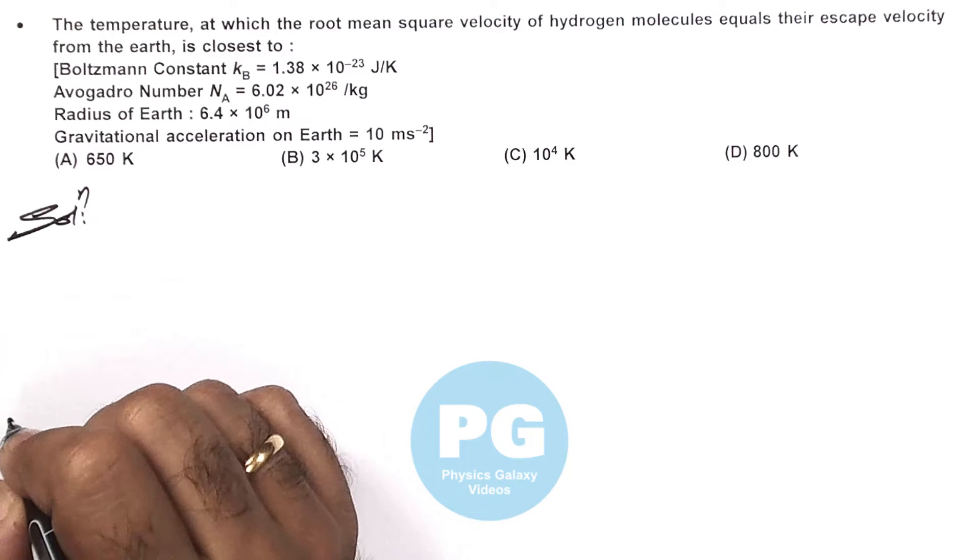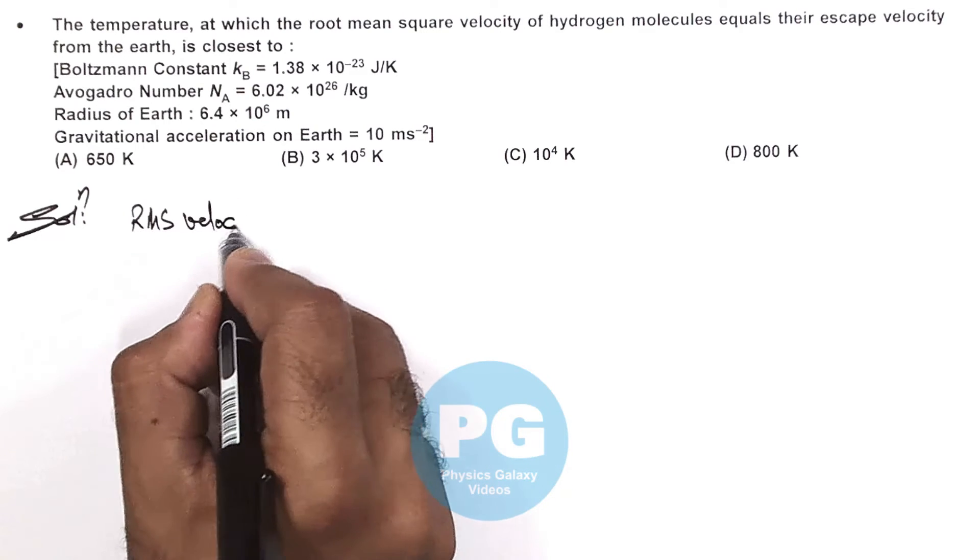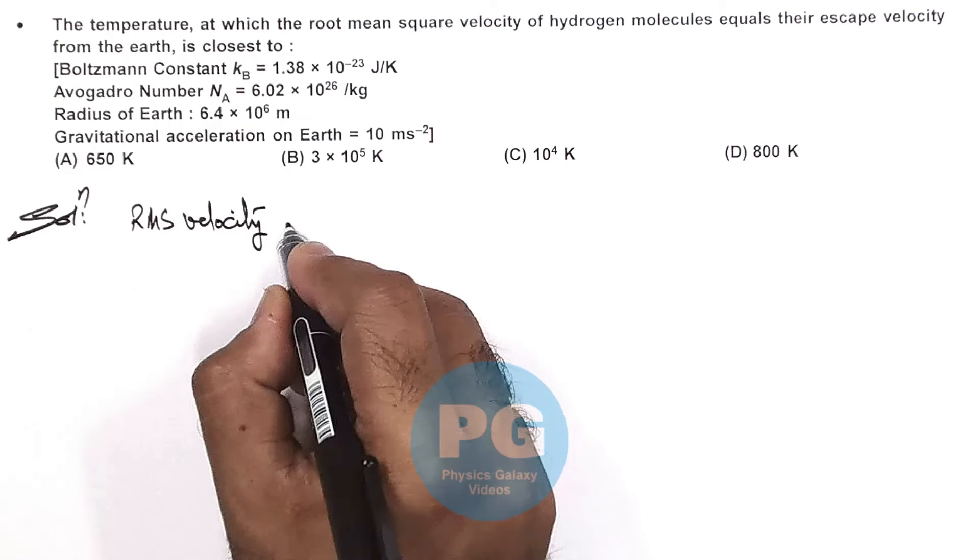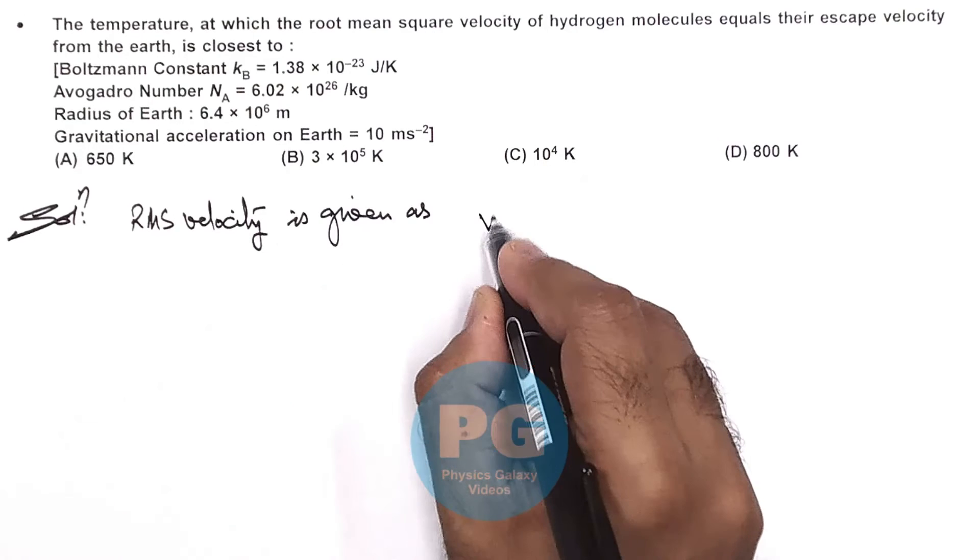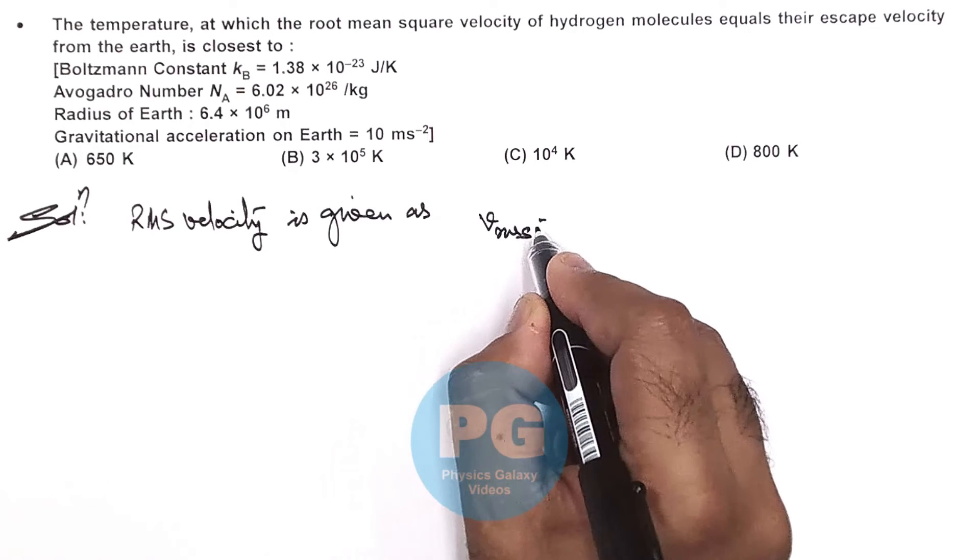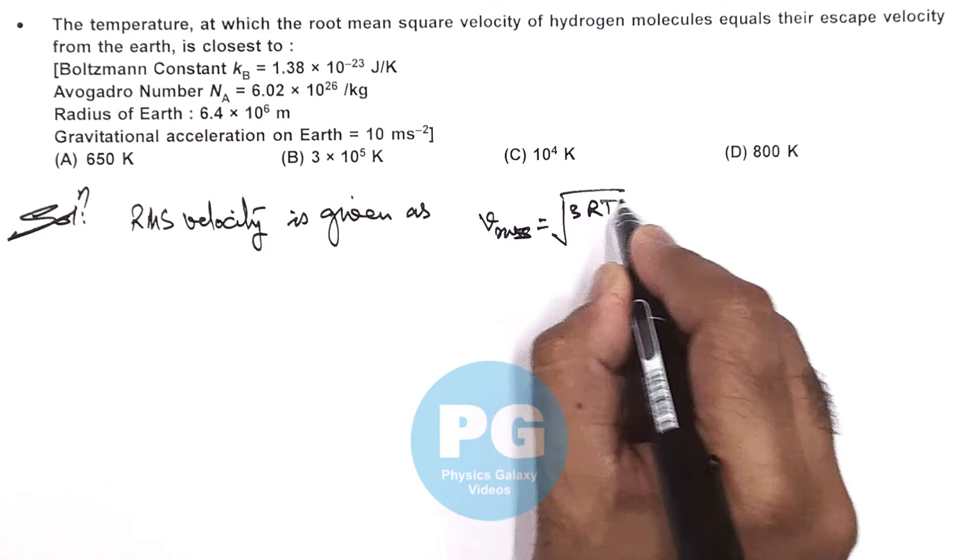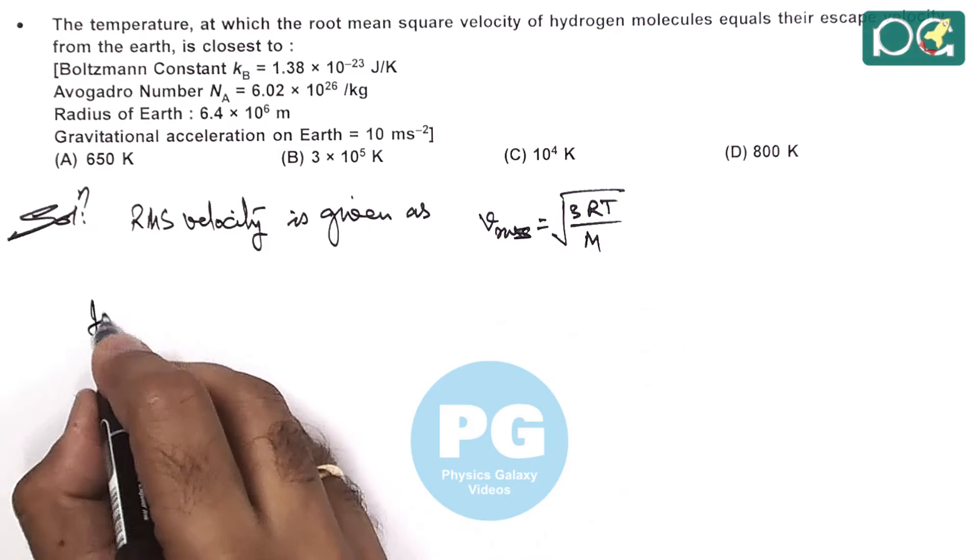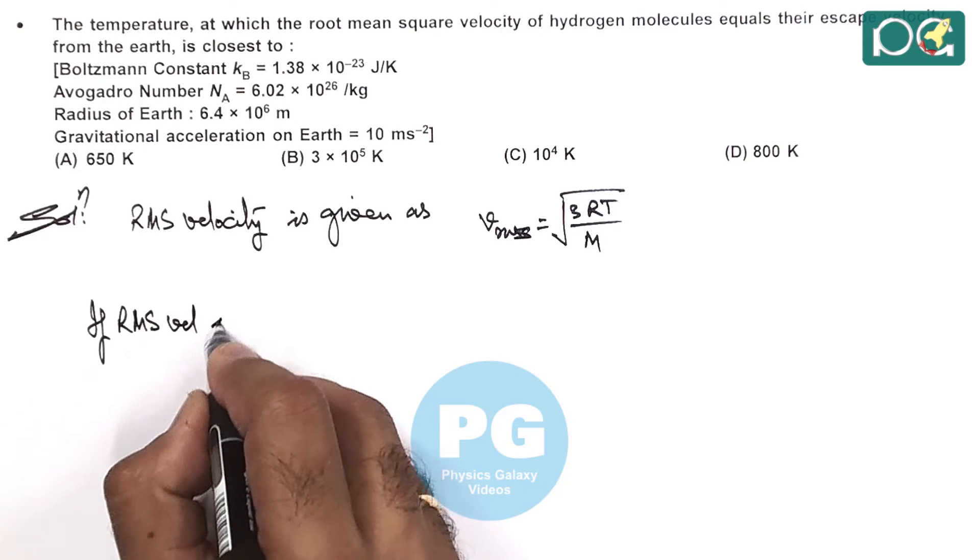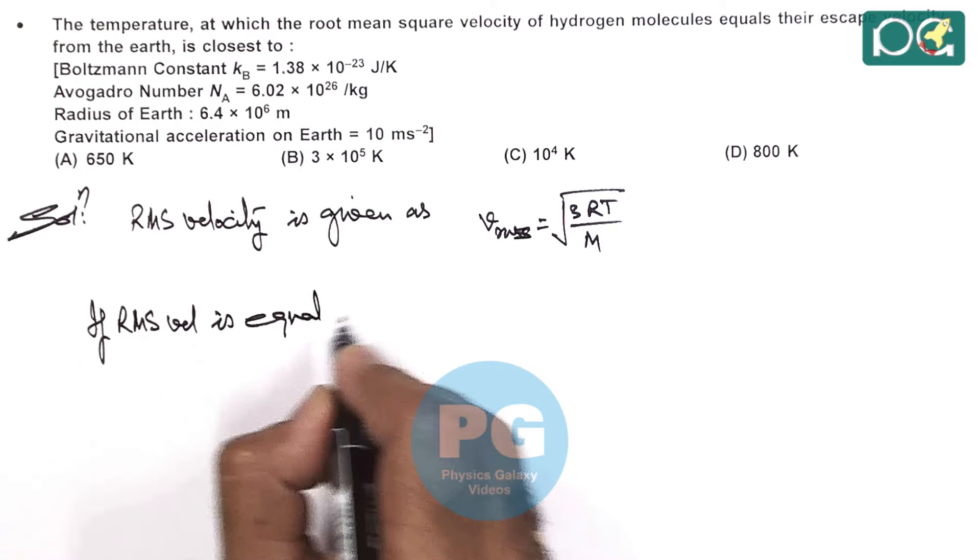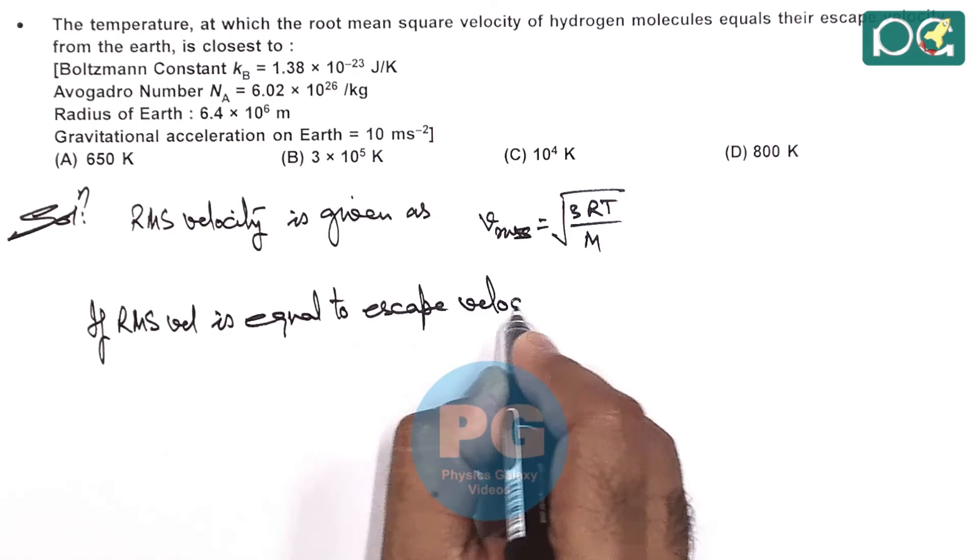So here in solution we can see the RMS velocity is given as, here we are talking about hydrogen molecules, so RMS velocity is given as root of 3RT by M. So if RMS velocity is equal to escape velocity,